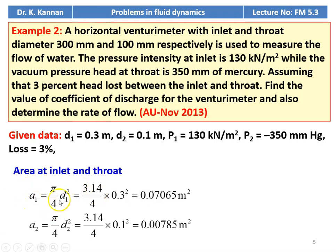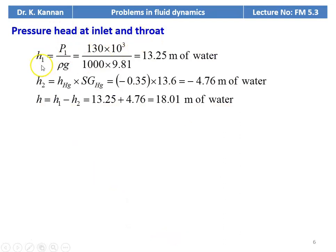Given: inlet diameter D1 equals 0.3 meter, throat diameter D2 equals 0.1 meter, pressure at inlet is 130 kilonewton per meter square, pressure at throat is minus 350 millimeter of mercury. Area at inlet A1 equals pi/4 into 0.3 square equals 0.07065 meter square. Area at throat A2 equals pi/4 into 0.1 square equals 0.00785 meter square. Pressure head at inlet H1 equals 130 into 10 power 3 divided by 1000 into 9.81 equals 13.25 meter of water. Head at throat H2 equals minus 0.35 into 13.6 equals minus 4.76 meter of water. Head difference H equals H1 minus H2 equals 13.25 plus 4.76 equals 18.01 meter of water.